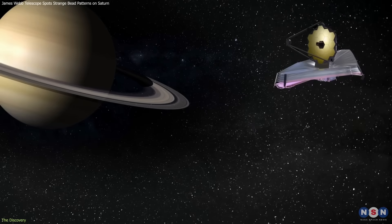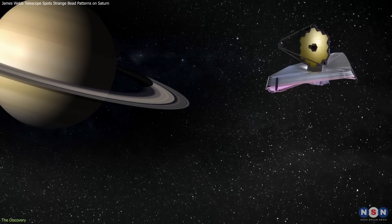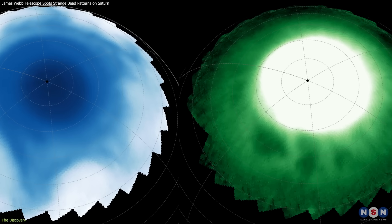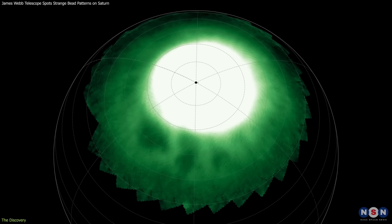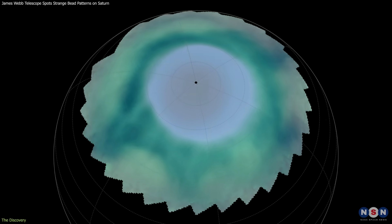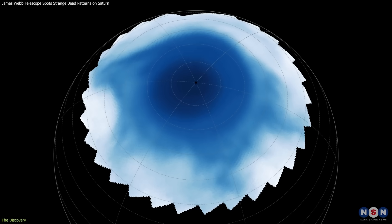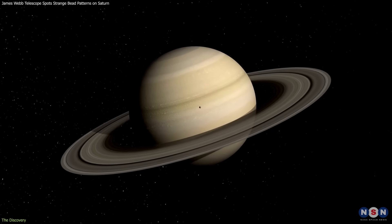This was the first time its ionosphere and stratosphere had been mapped simultaneously with such detail. Instead of broad, uniform emissions, it revealed fine-scaled patterns that nobody predicted. For planetary scientists, it was a reminder that it's more complex and more dynamic than models had assumed.